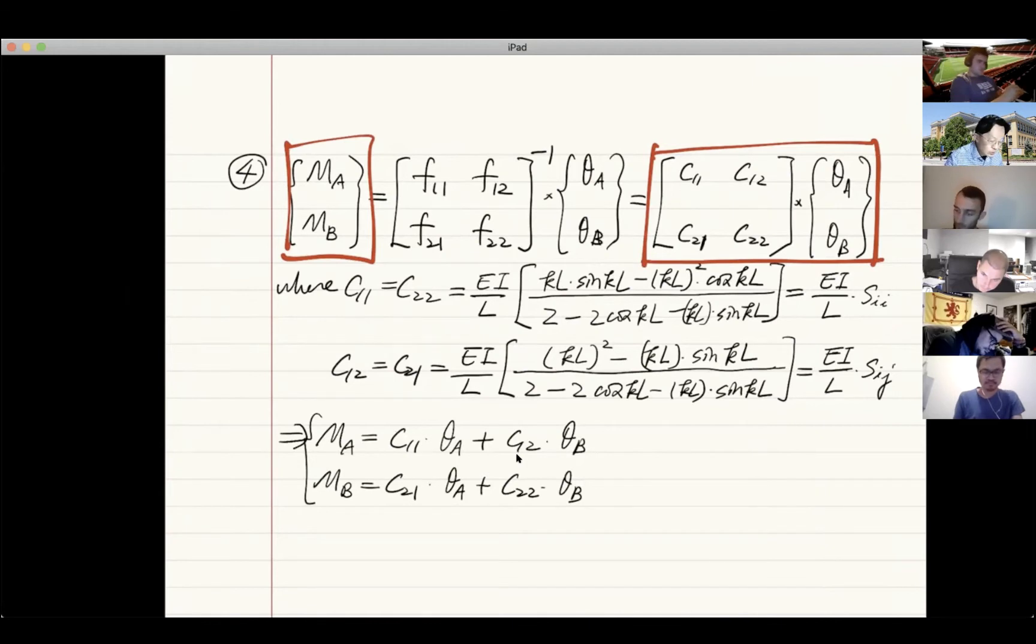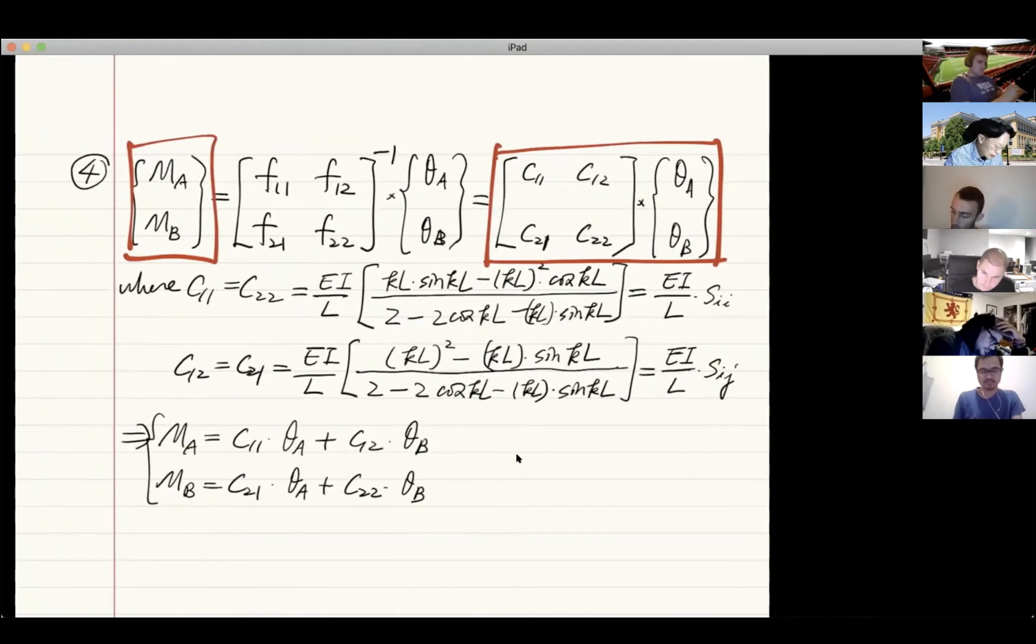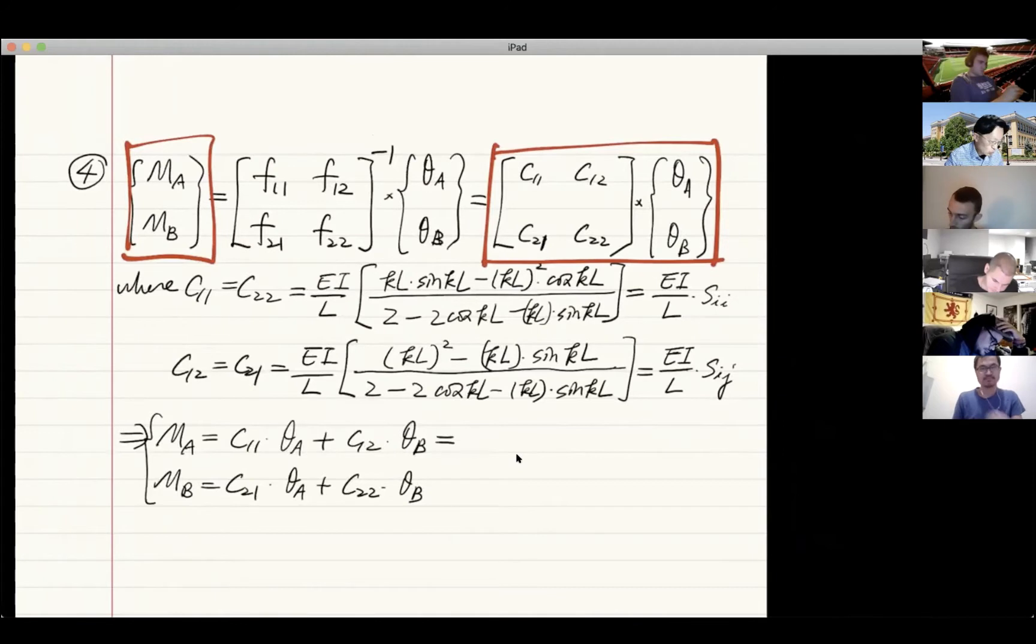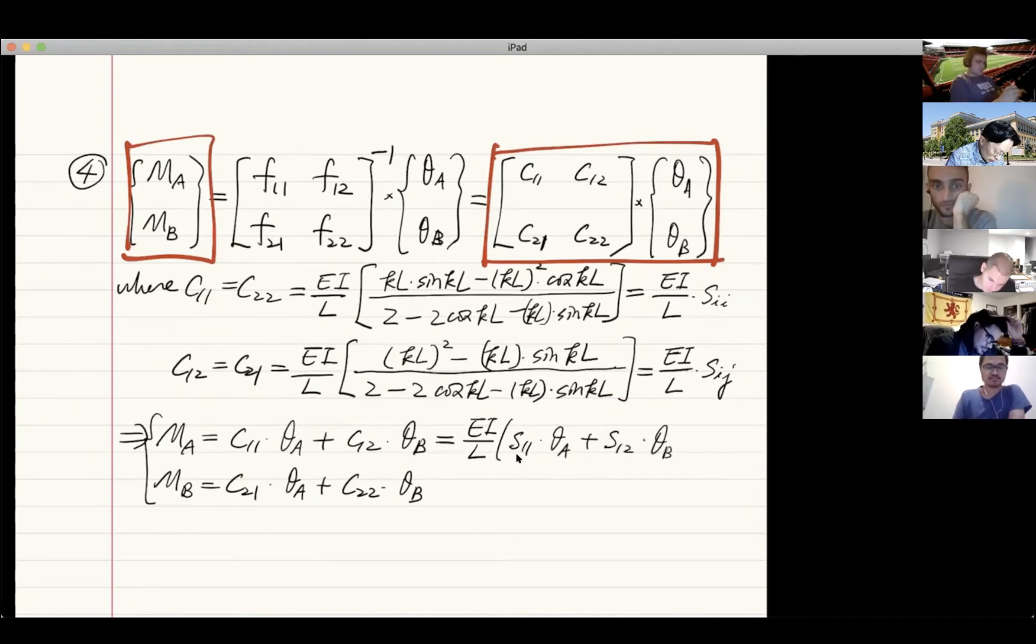Now with the definition of this s11, sii, and sij, you can also write it this way. By taking the coefficient ei out, this becomes s11 times theta A plus s12 times theta B. And for MB, it becomes ei over L times s21 times theta A plus s22 times theta B, like this.